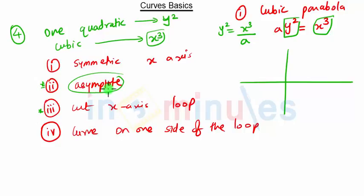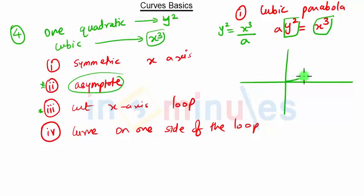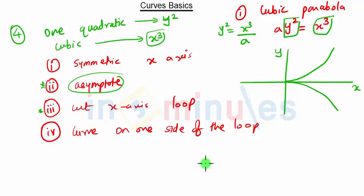Asymptotes can be present or absent — these are optional. Similarly, the curve may or may not cut the axis at two points. The cubic parabola is symmetric about the x-axis and extends in both directions.